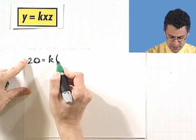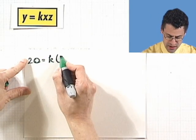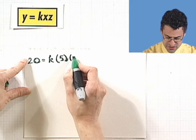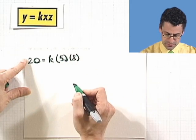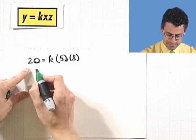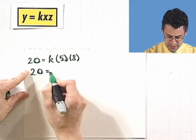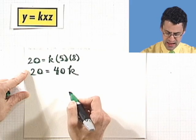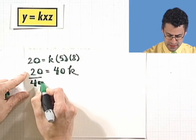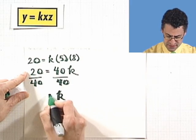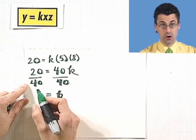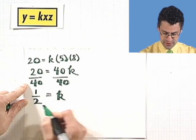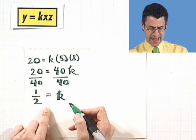equals K times the base, which is 5, times the height, which is 8. And so I see that 20 equals 40K. Divide both sides by 40 to get the constant alone. And we see 20 over 40, which is 1 half. So K equals 1 half.